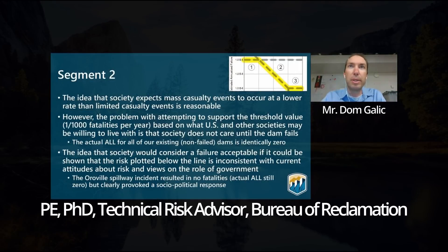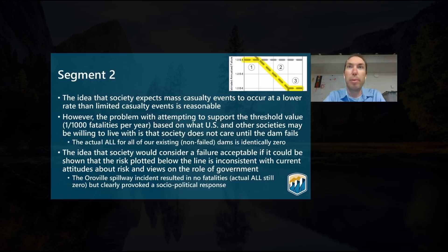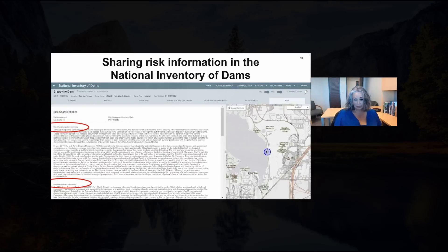For this diagonal segment two, the 2011 document argued that society expects mass casualty events to occur at a lower rate than limited casualty events, and that's entirely reasonable. The problem with attempting to support that threshold value — which is essentially one in a thousand fatalities per year — based on what U.S. and other societies may be willing to live with, is that society doesn't really care until after the dam fails. So this is something that we've asked our districts to focus on: putting these kinds of descriptions into plain language so that people can understand the risk that they're living with and accepting every day.